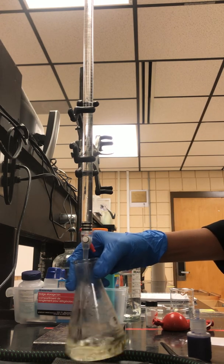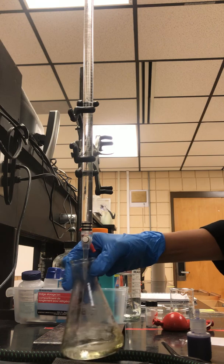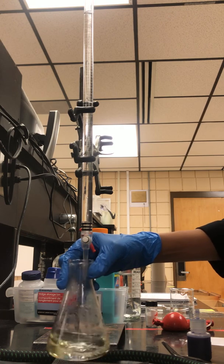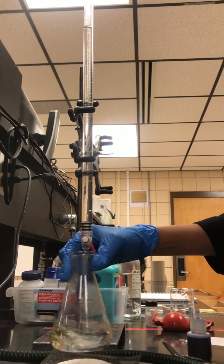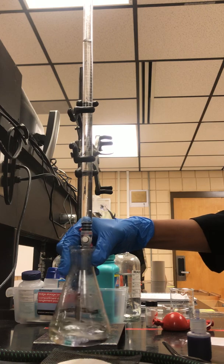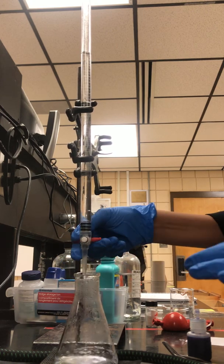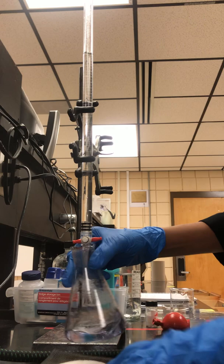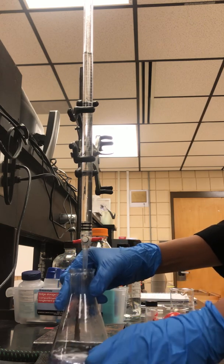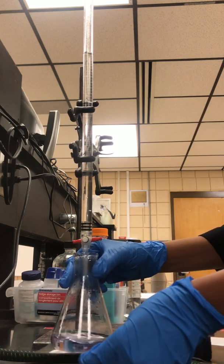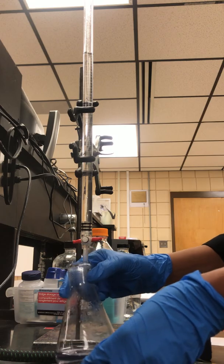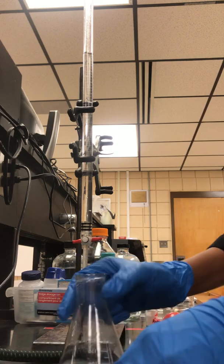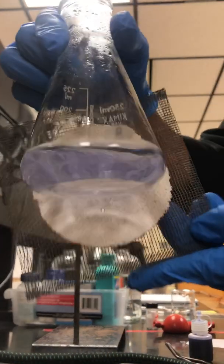We want to just gently turn and swirl until we get a faint blue color. You notice I stopped it because it started to turn blue.